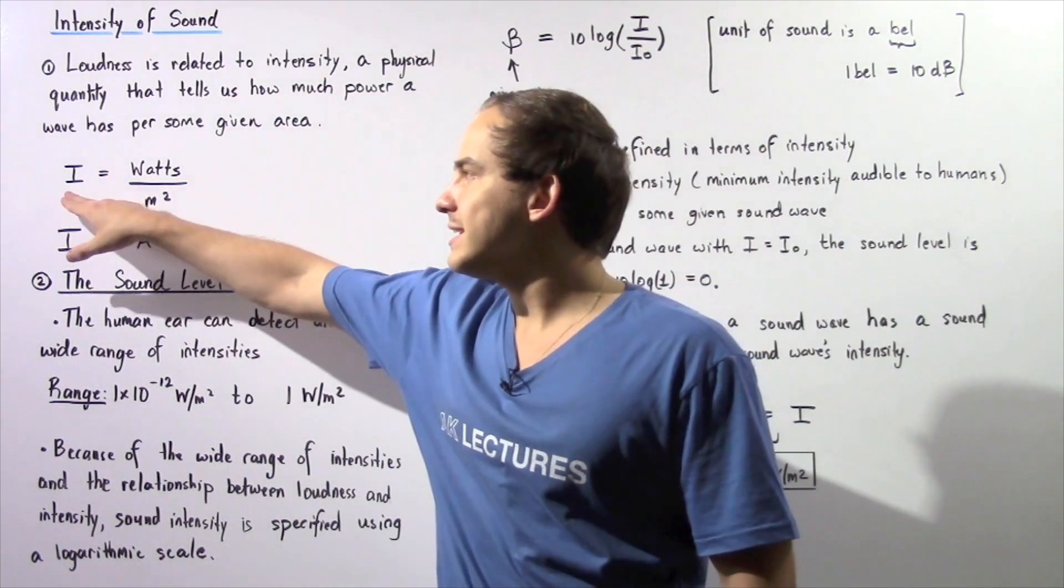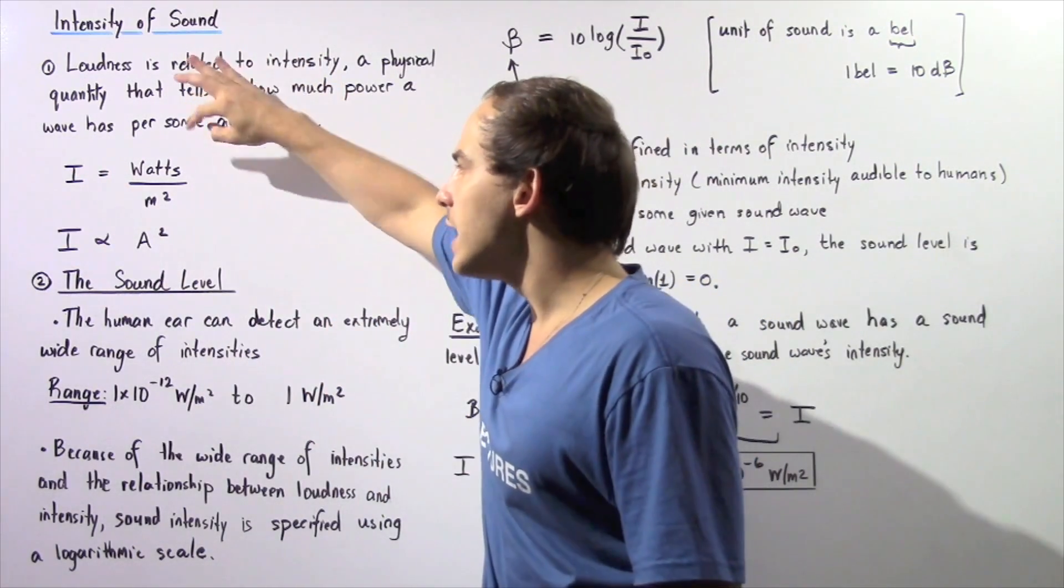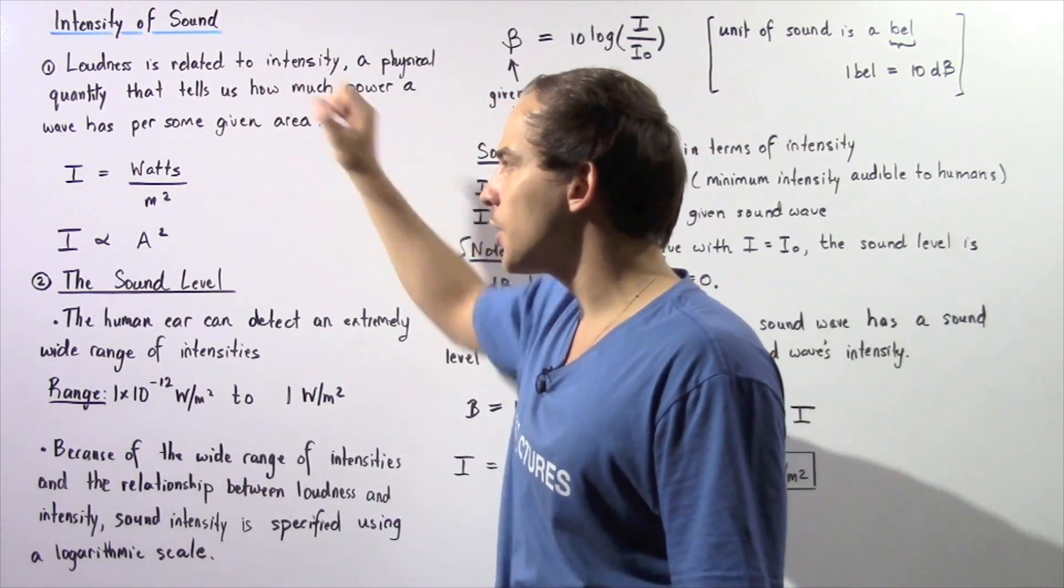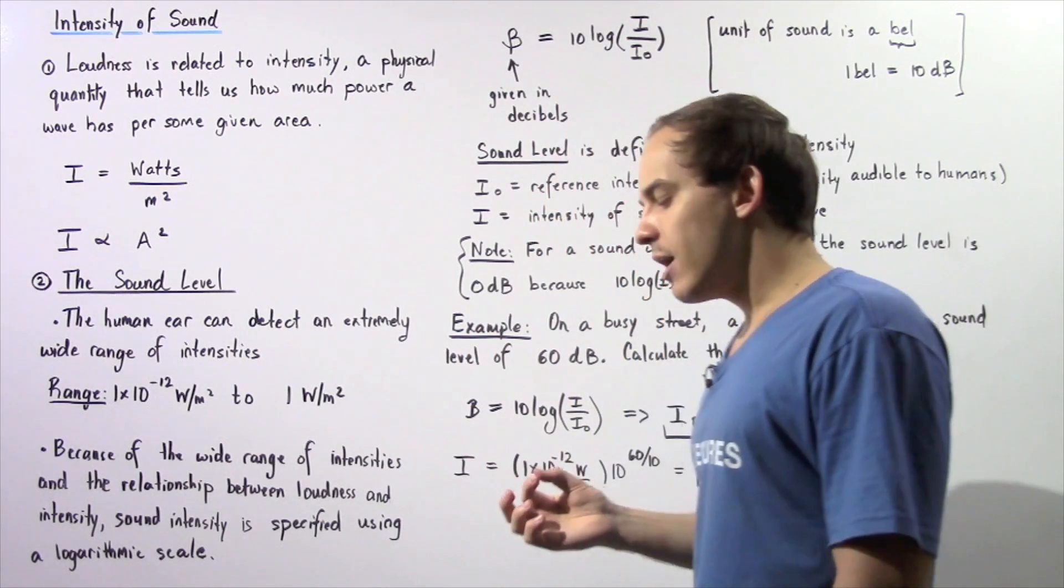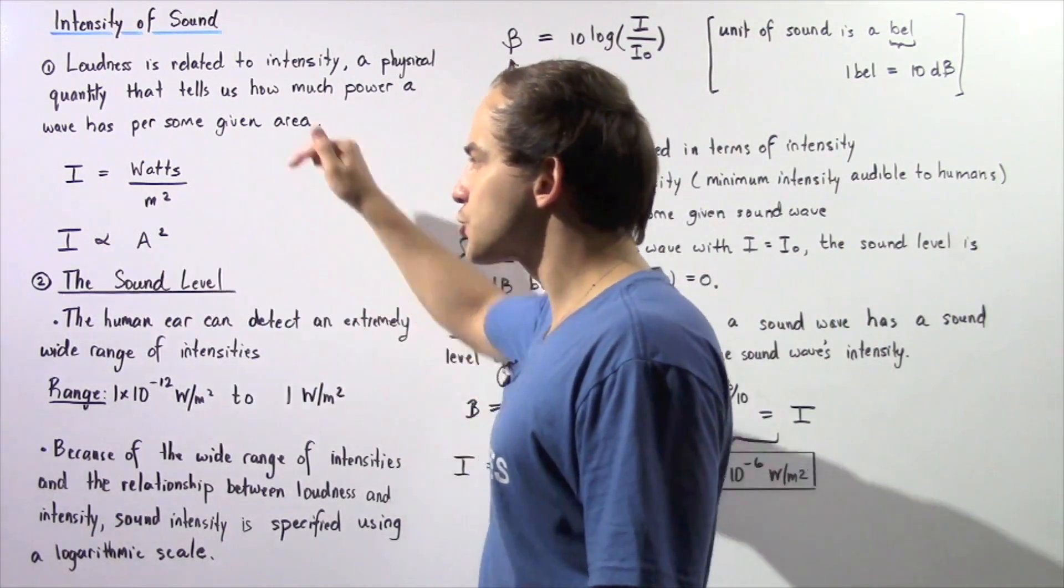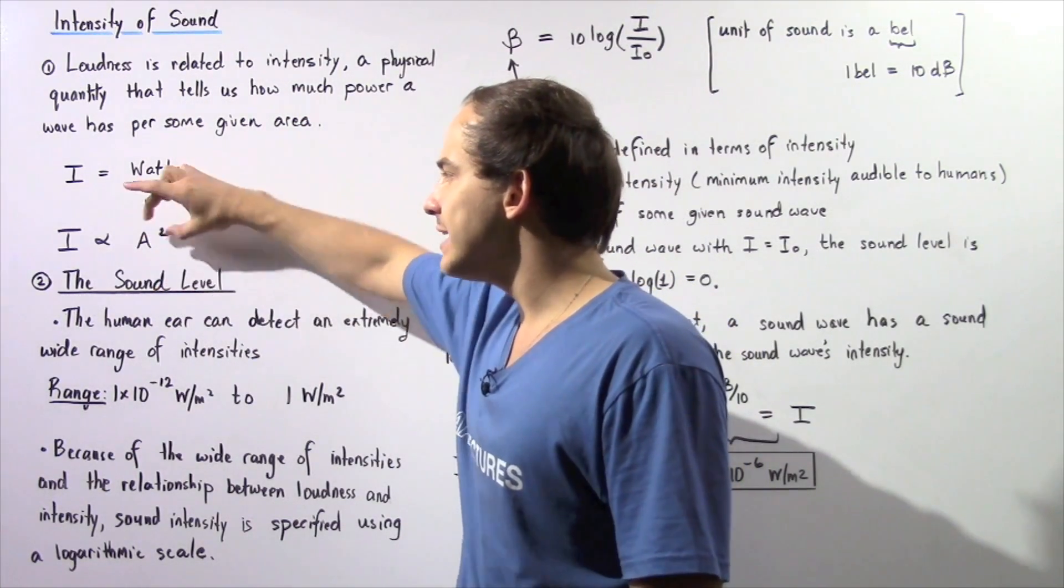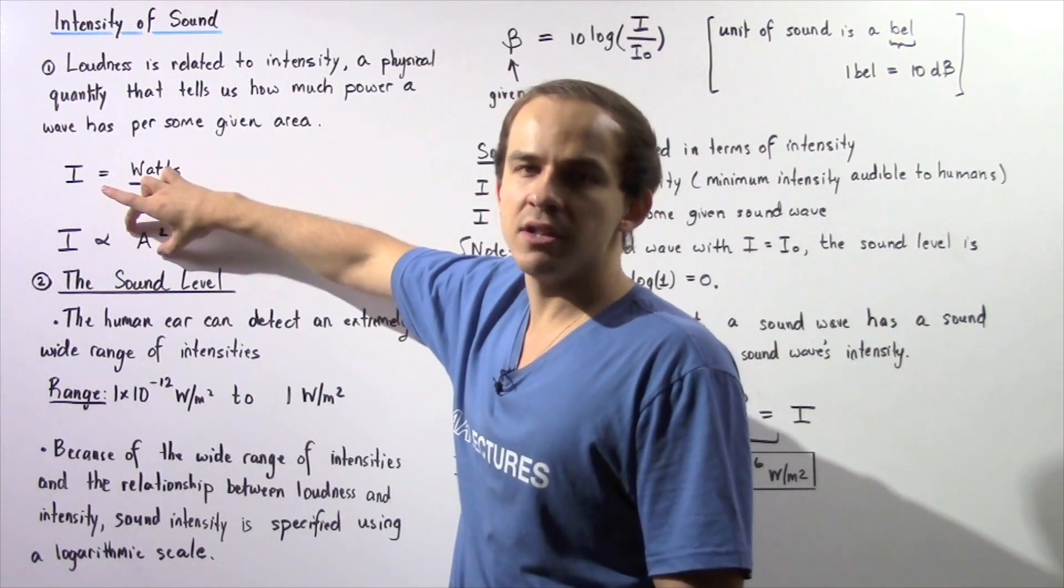Our intensity, given by capital I, has units of watts per meter squared, so power per area. Recall that intensity is directly correlated to the square of our amplitude, where the amplitude is given by capital A.